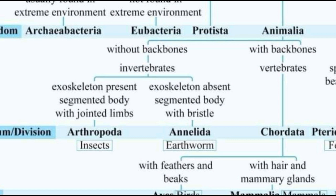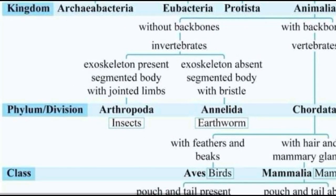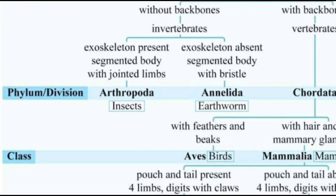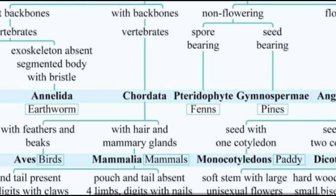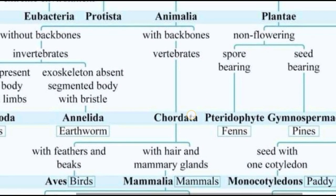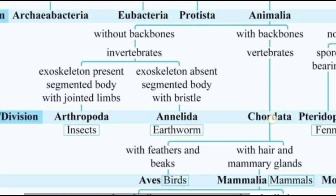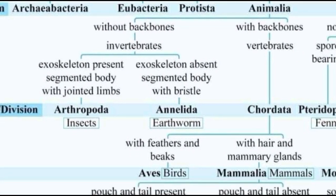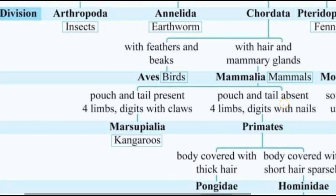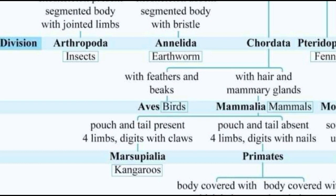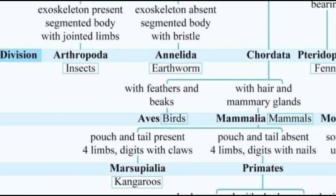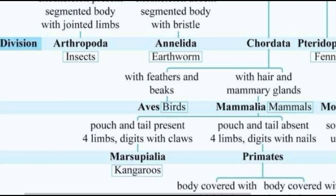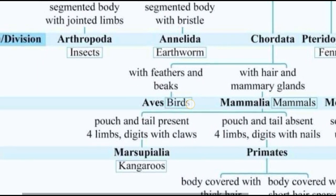Exoskeleton absent — segmented body. With bristles. The final division — insects. Exoskeleton absent, segmented body with bristles. The final division with any leader — example: earthworm.